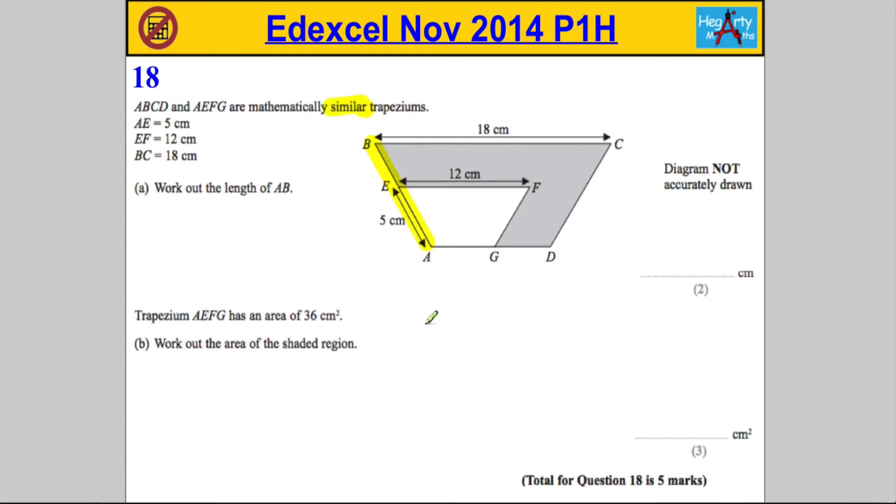Because the shapes are mathematically similar, we're going to want to work out the length scale factor, or the linear scale factor. The way we do that is we take corresponding sides and divide them.